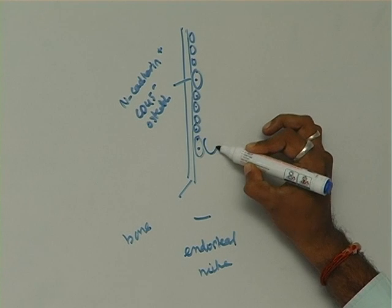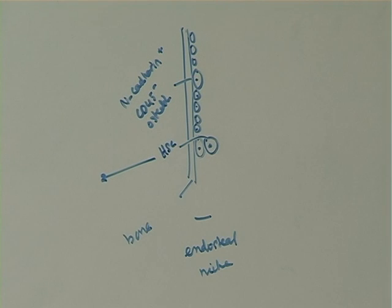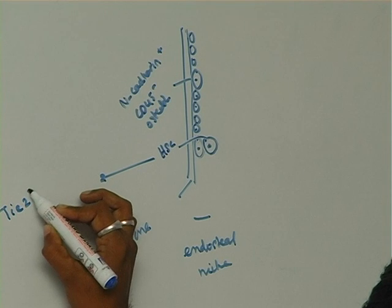So suppose this is the HSC, the hematopoietic stem cell. The markers for the hematopoietic stem cells here are tie-2 positive,